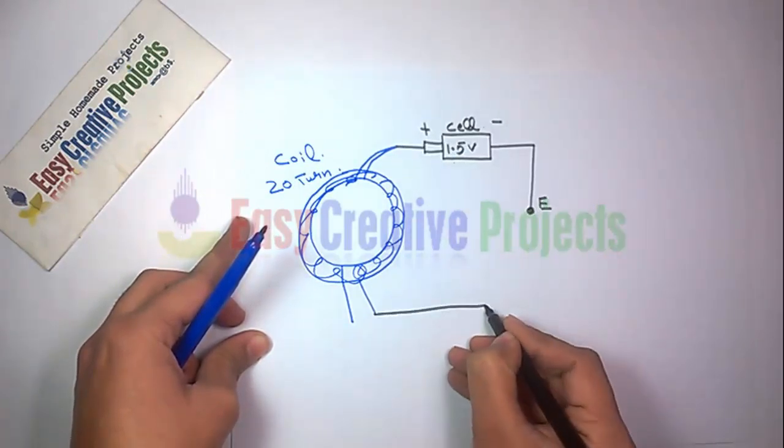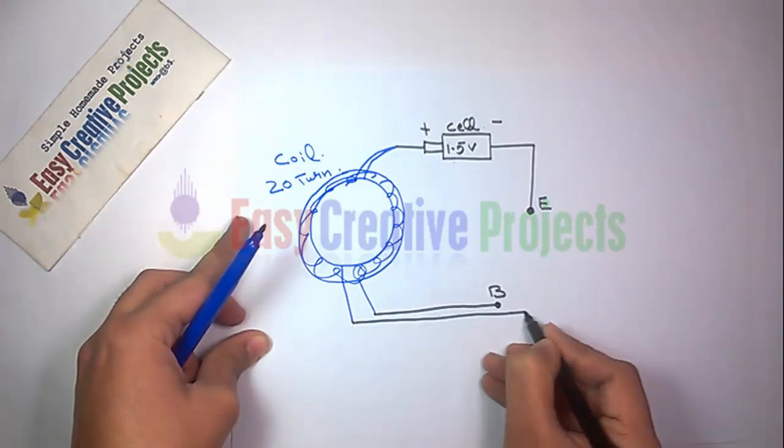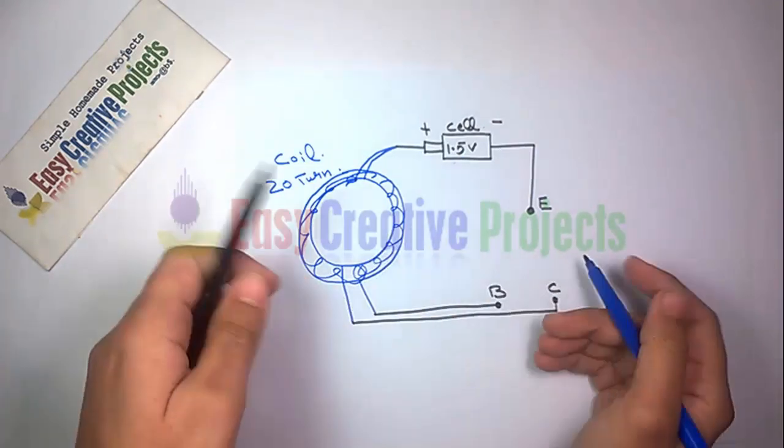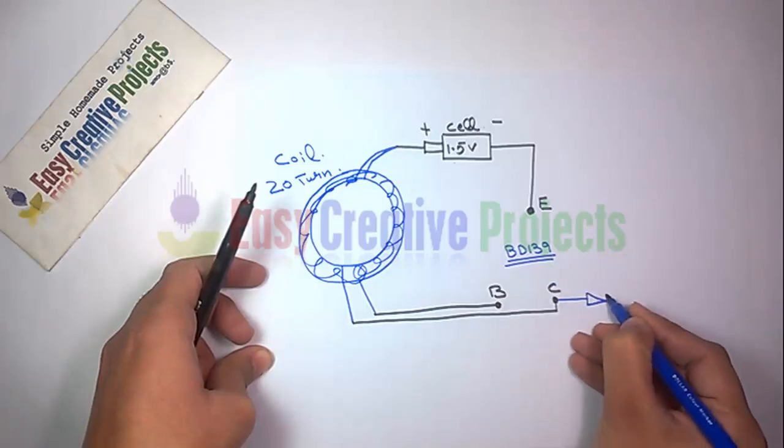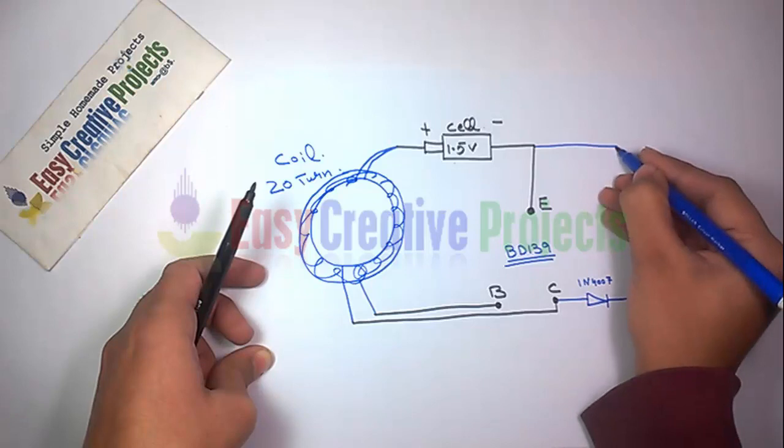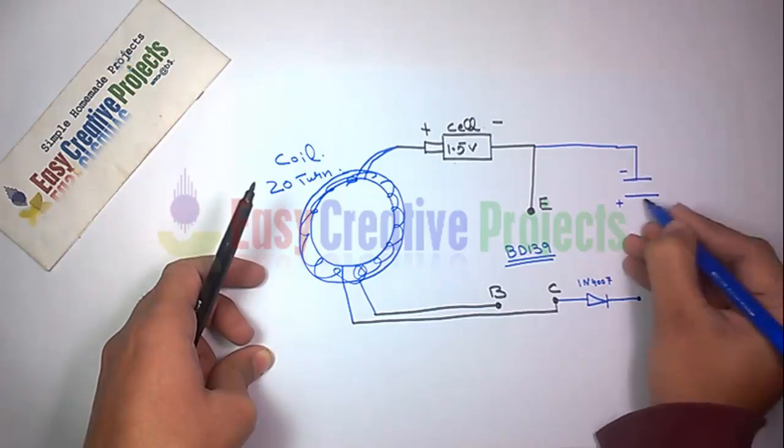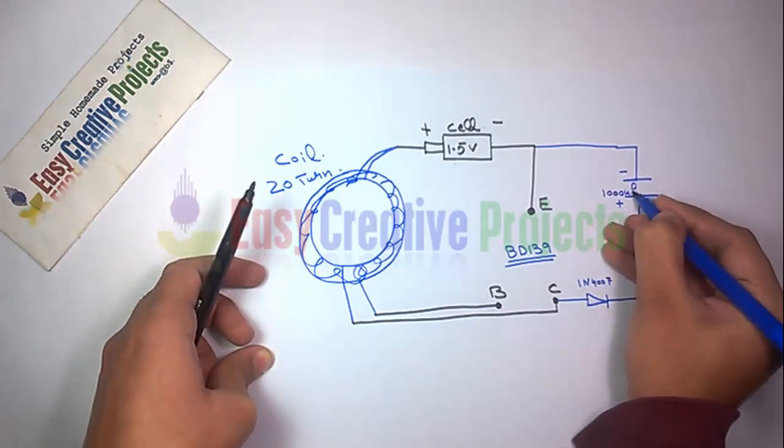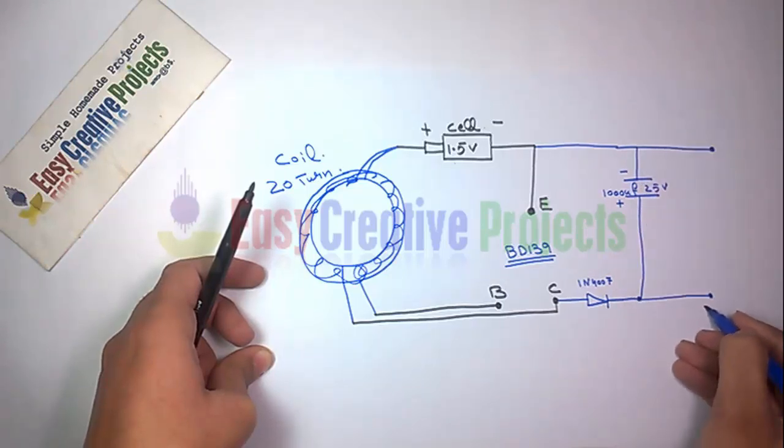The third wire connects with the collector. Now connect the diode with the collector. The negative side of the capacitor connects with the emitter and the positive side connects with the second side of the diode.